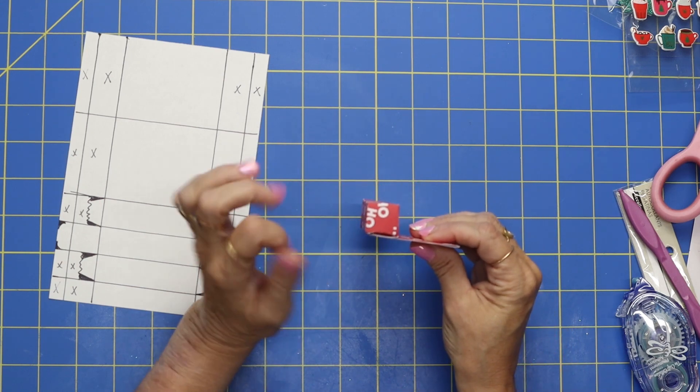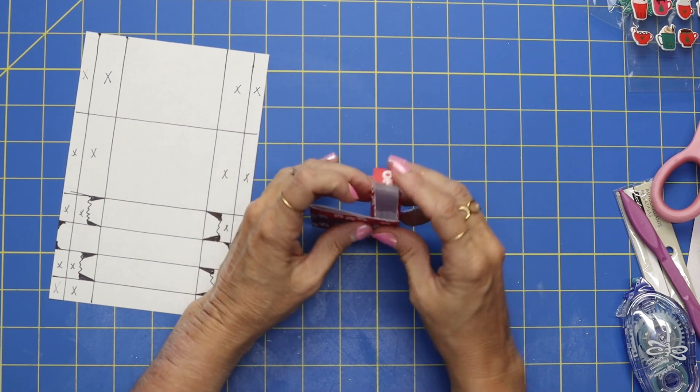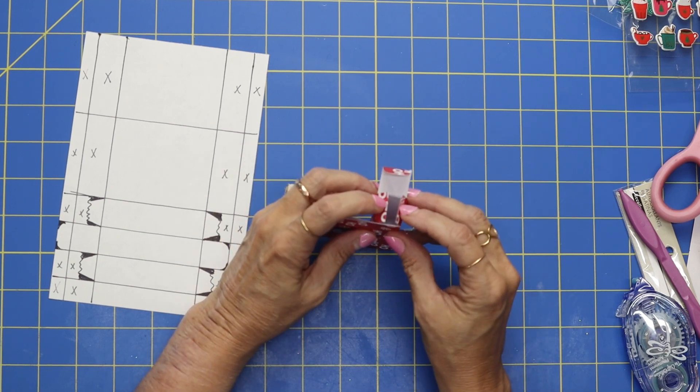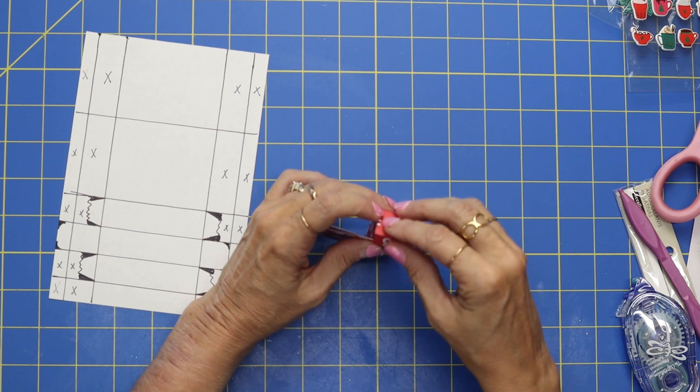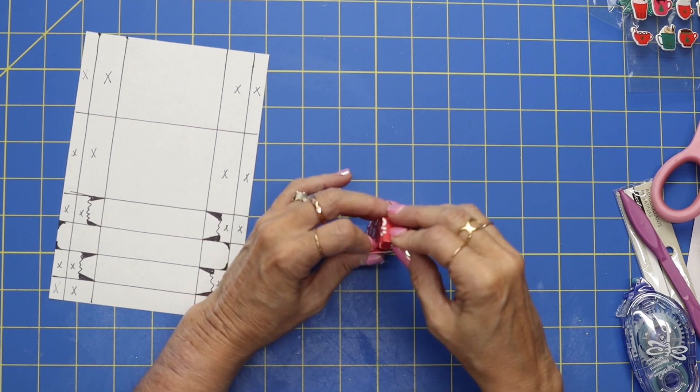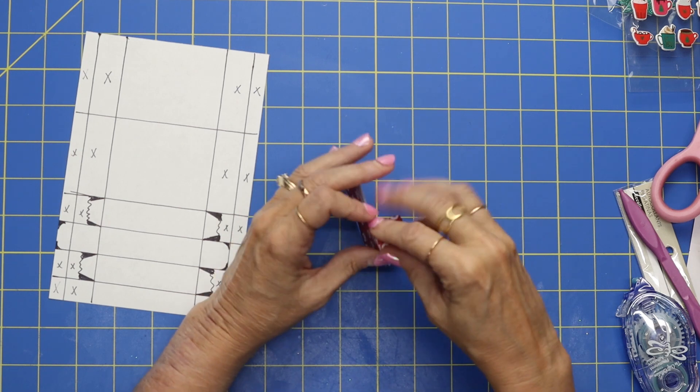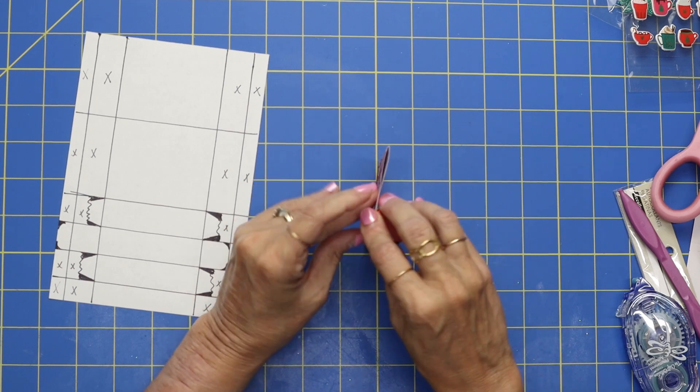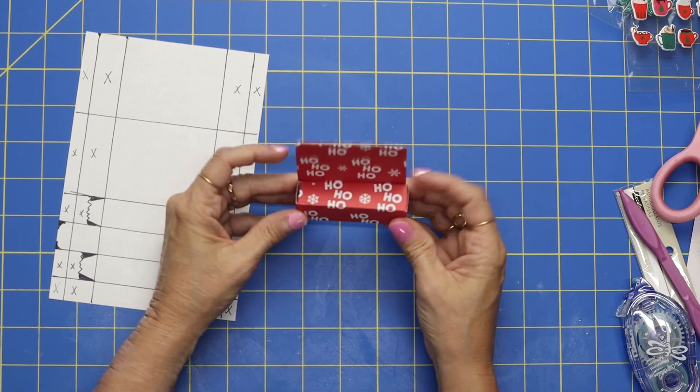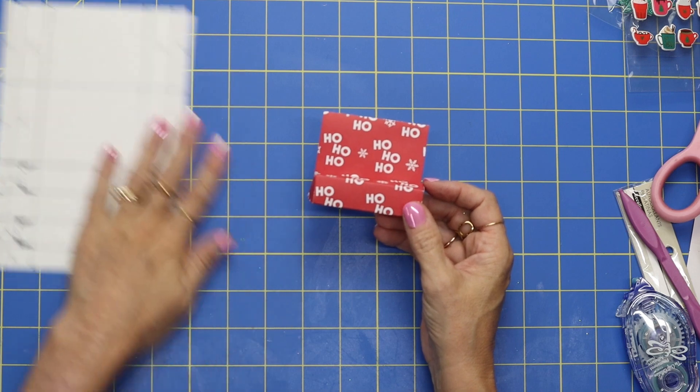Look how perfect that works. So then over here we've got our two little pieces that we cut down. They fold over and then our little rounded piece just folds in so nicely. And there is our cute little box.